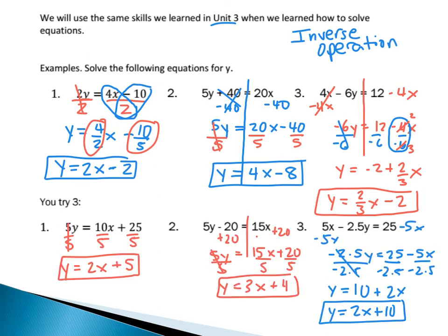Hopefully you paused the video. Here are the answers. The first one just required dividing by 5. I divided each of the numbers: 10 by 5 and 25 by 5, which gives me 2x plus 5 equals y.